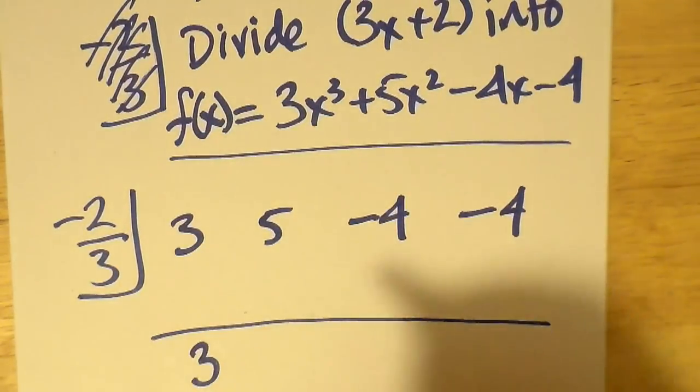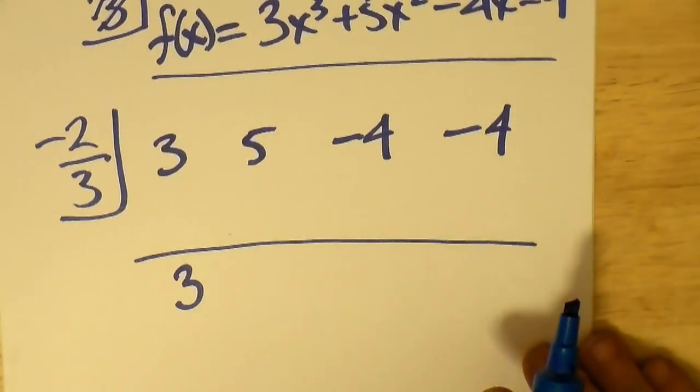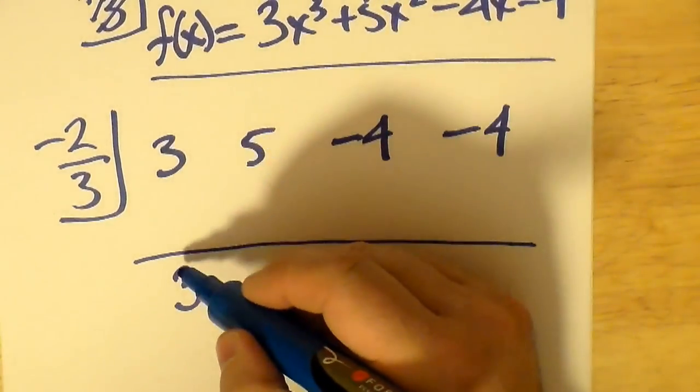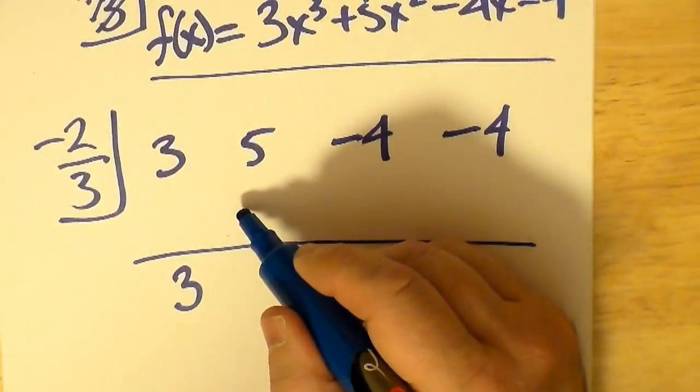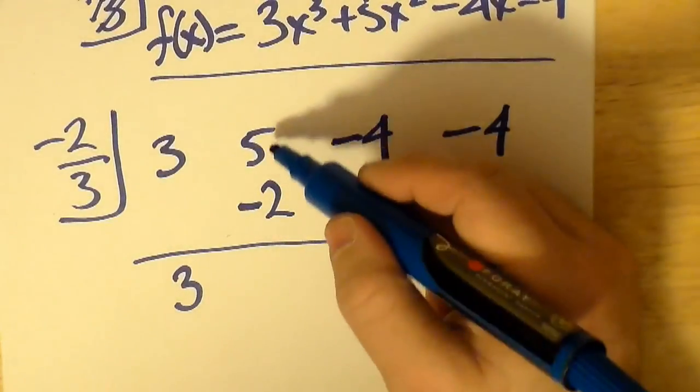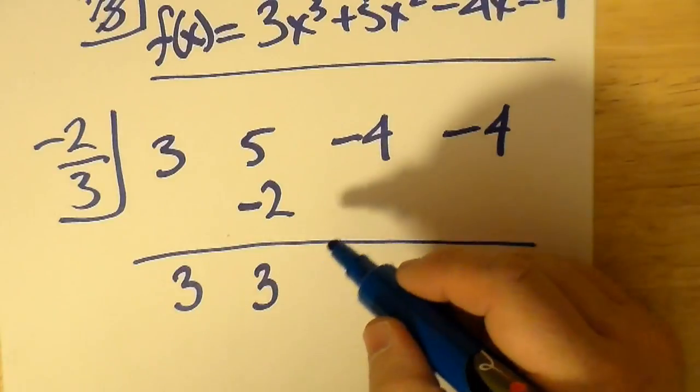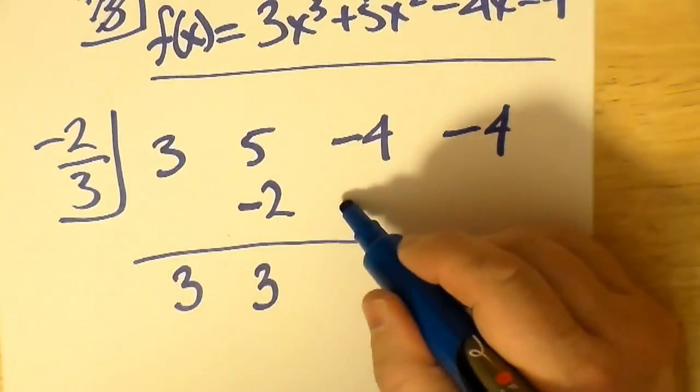I'm going to proceed to add as I go along. So 3 times negative 2/3—well, you just bring down the 3 first. But 3 times negative 2/3 is negative 2. 5 minus 2 is 3.